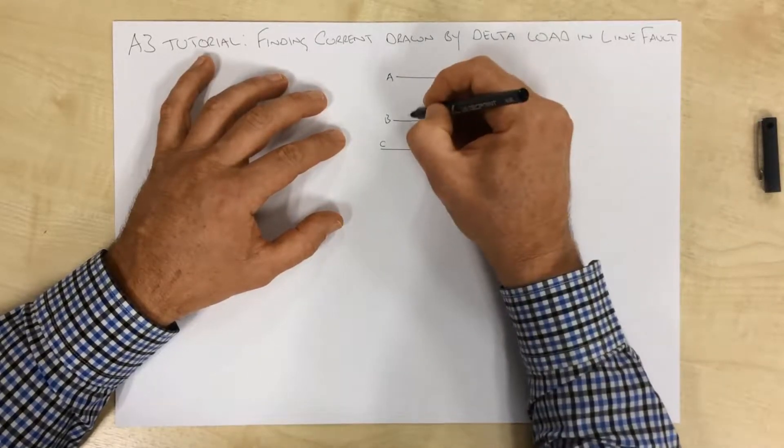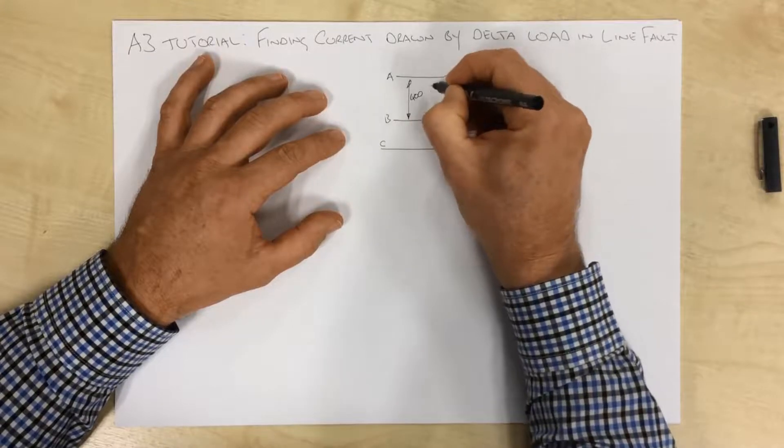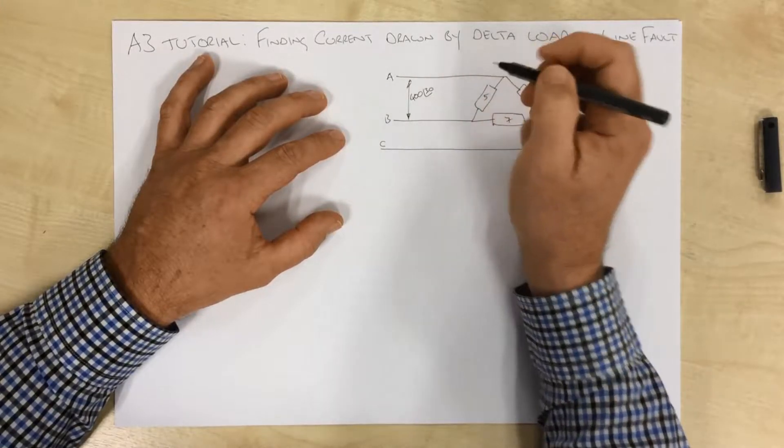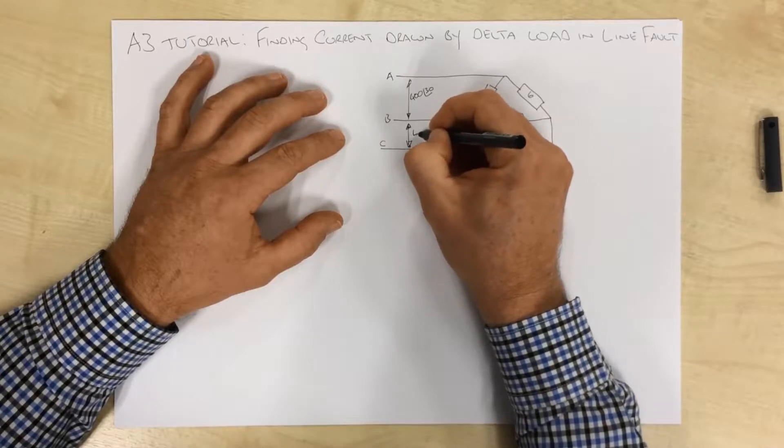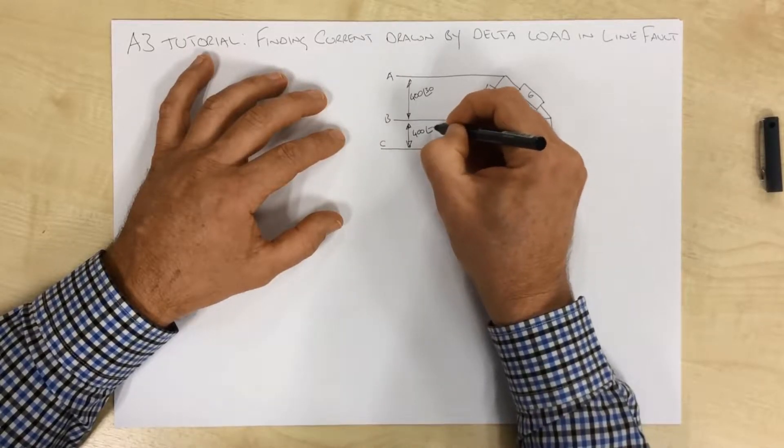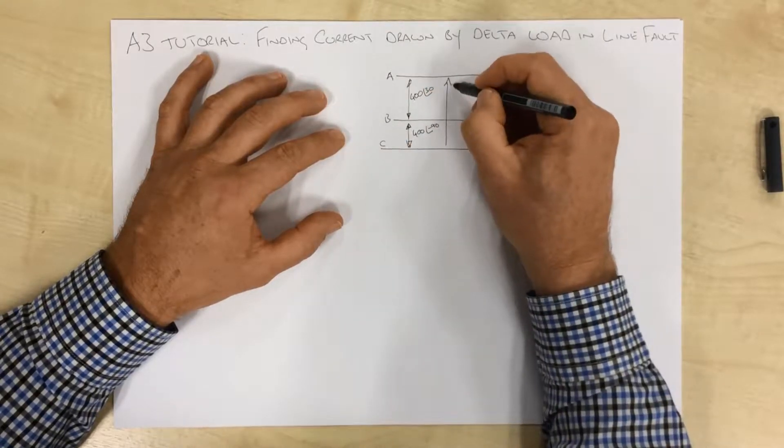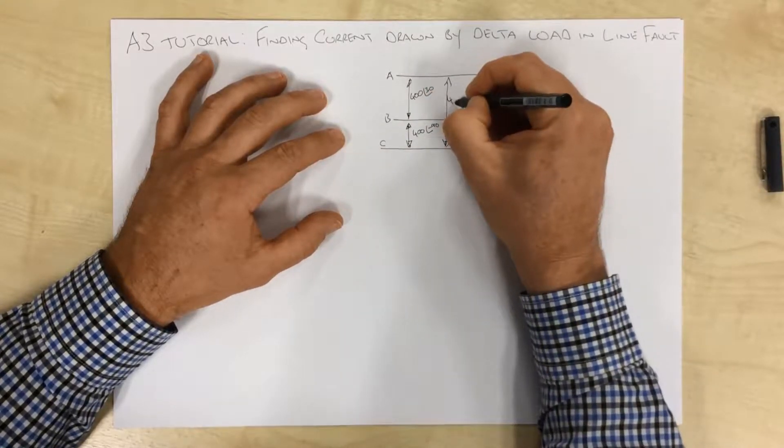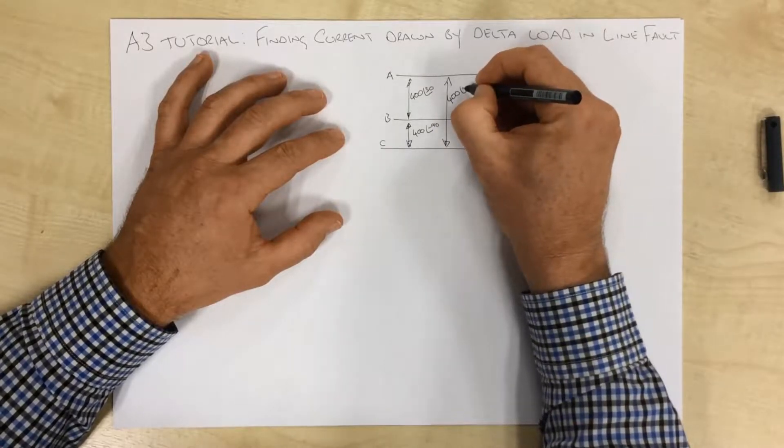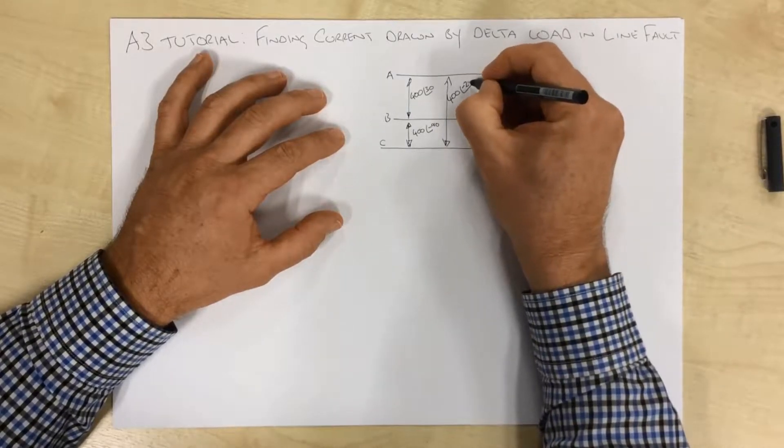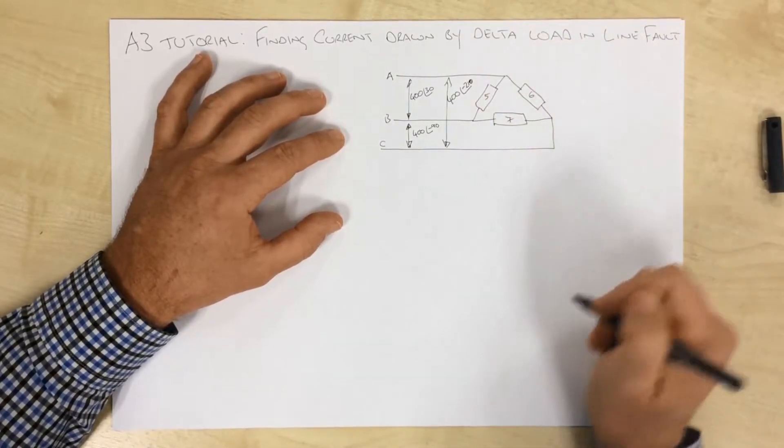Now, with a three-phase system, we know that we have 400 volts here with a phase angle of 30 degrees, we have 400 here with an angle of minus 90, and we have 400 here with an angle of minus 210. So there's our three-phase system.